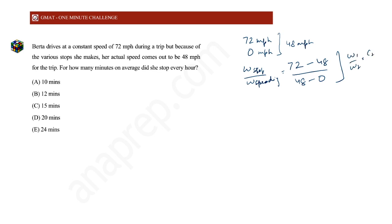This gives me 24 upon 48, which is 1 upon 2. That means the ratio of the time for which she stopped to the time for which she was speeding is 1 to 2.